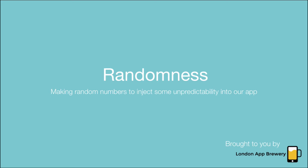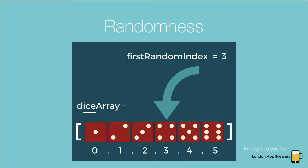So why do we need this random number? We have a dice array that consists of the six images representing the six possible sides of the dice. They are named dice one through to dice six, but the index of the dice array starts from zero and goes all the way up to five. So when we generate a random number, we'll want a number between zero and five, and then we're going to use that number to pick out the dice image.